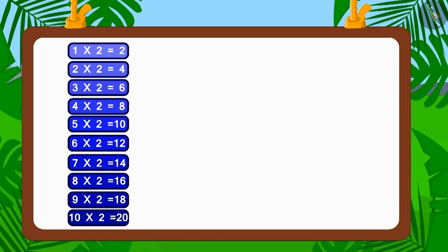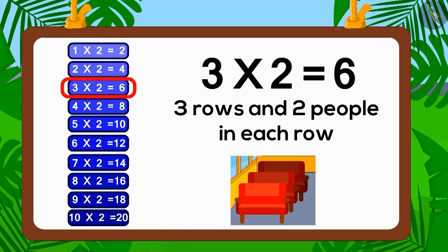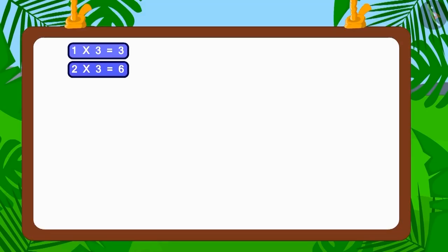Does the number 6 appear in the table of 2? Yes, 3 times 2 is 6. Therefore, 2 is the factor of 6. So if 2 people sit in each of 3 rows, how many people would be able to sit? 6. Now let's look at the table of 3.